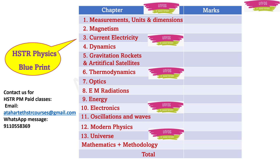From the 2015 question paper, the number of questions asked per chapter were: measurements, units and dimensions — 2 questions; magnetism — 2 questions; current electricity — 3 questions; dynamics — 3 questions; gravitation, rockets and artificial satellites — 4 questions; thermodynamics — 3 questions; optics — 5 questions; electromagnetic radiations — 3 questions; energy — 2 questions; electronics — 4 questions; oscillations and waves — 3 questions; modern physics — 3 questions; universe — 3 questions. These are the number of questions from each chapter in the 2015 paper.